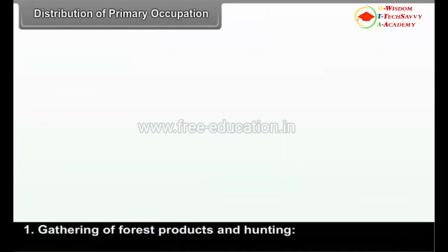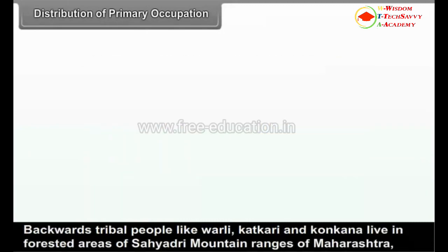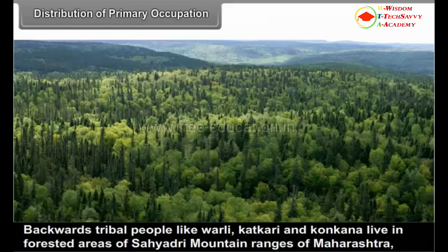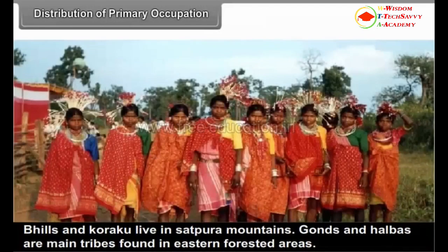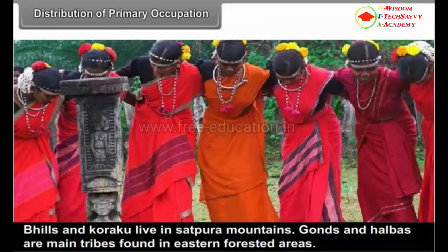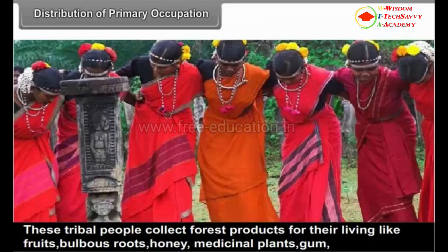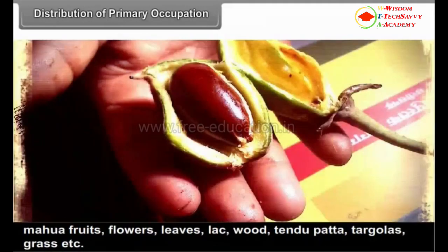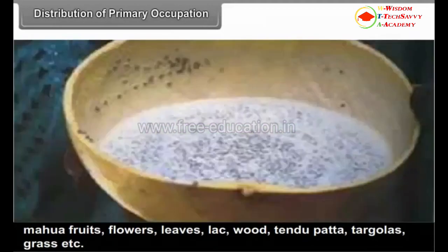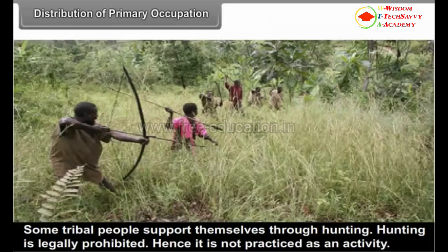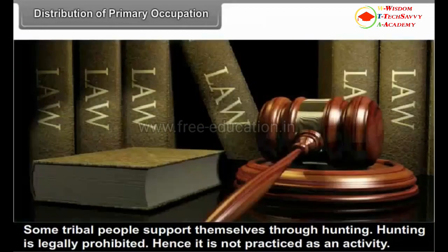1. Gathering of Forest Products and Hunting: Backward tribal people like Varli, Katkari and Konkana live in the forested areas of Sahyadri mountain ranges of Maharashtra. Bhils and Koraku live in Satpura mountains. Gonds and Halbas are main tribes found in the eastern forested areas. These tribal people collect forest products for their living like fruits, roots, honey, medicinal plants, gum, mahua fruits, flowers, leaves, lac, wood, tendu patta, targolas, grass, etc. Some tribal people support themselves through hunting. Hunting is heavily prohibited, hence it is not practiced as an activity.